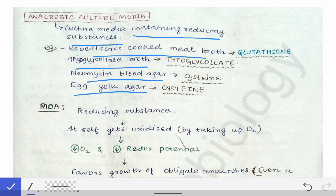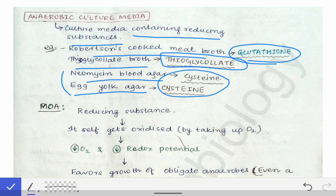The Robertson Cooked Meat Broth contains finely chopped meat particles, and in those meat particles we have glutathione and unsaturated fatty acids. Those substances act as the reducing substance for this broth. In the case of thioglycolate broth, thioglycolate itself is the reducing substance, whereas in the case of neomycin blood agar and egg yolk agar, cysteine acts as the reducing substance. Among these four, the Robertson Cooked Meat Broth is the most commonly used and the most frequently asked anaerobic culture media.